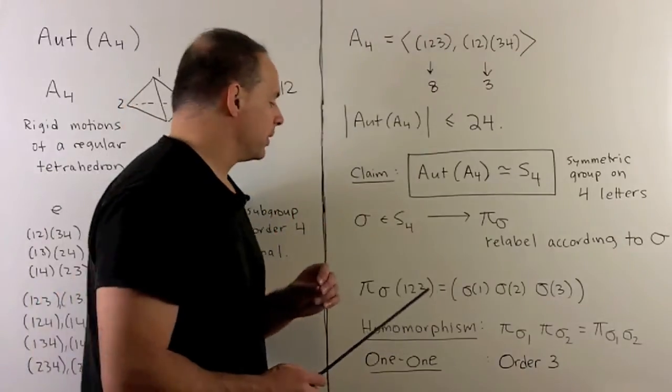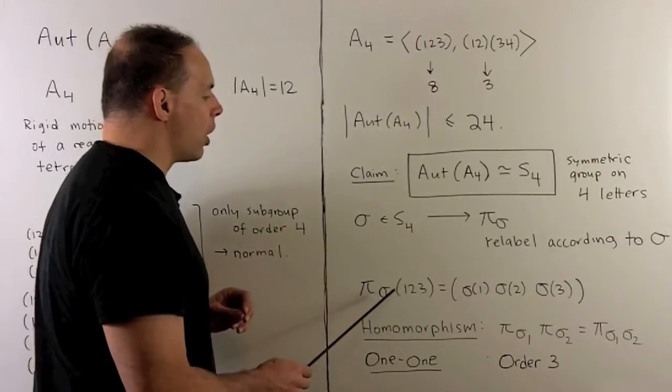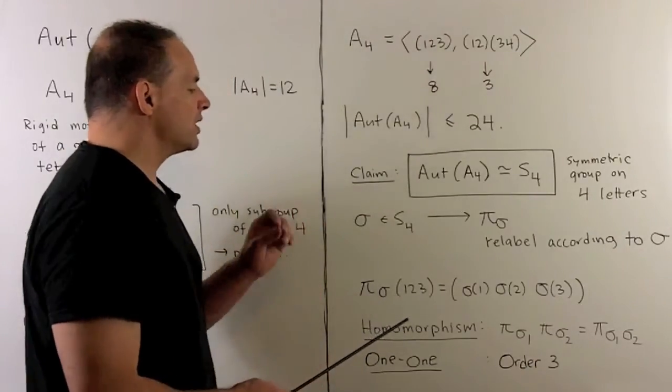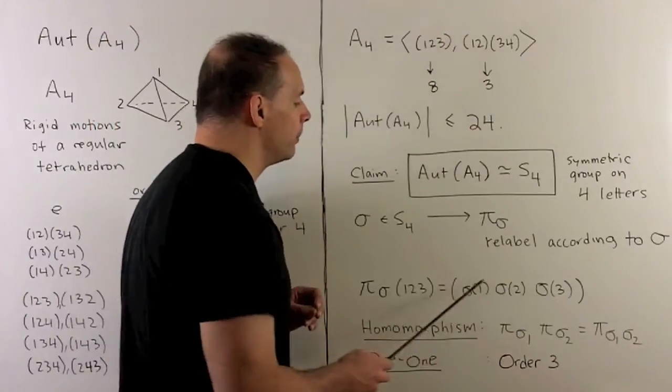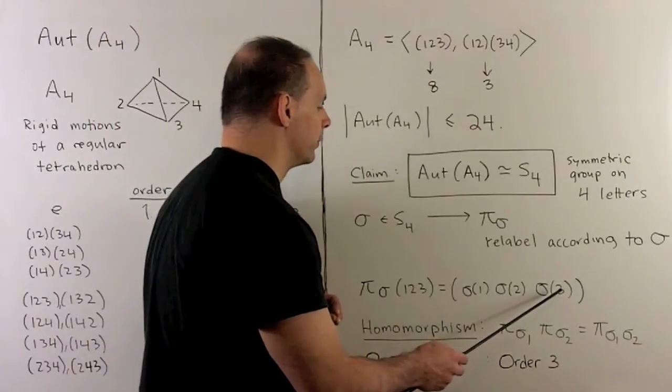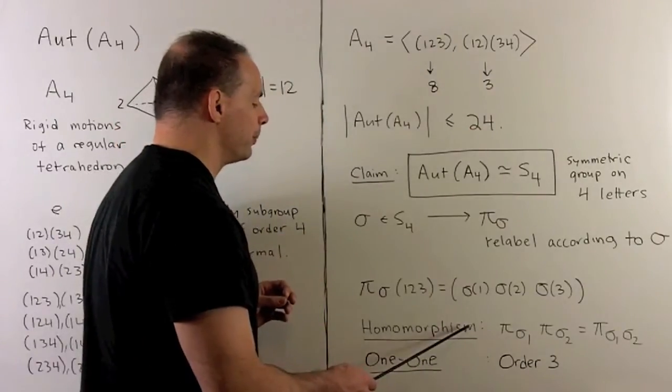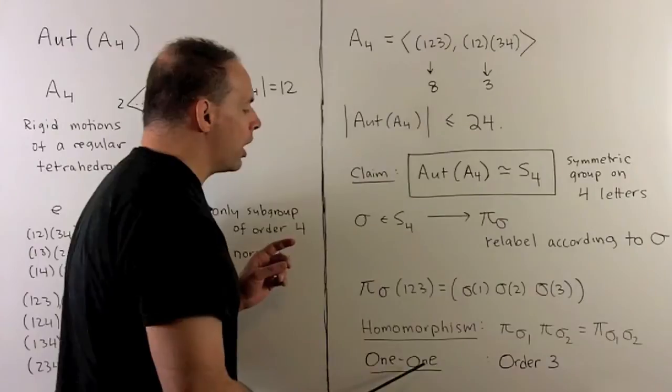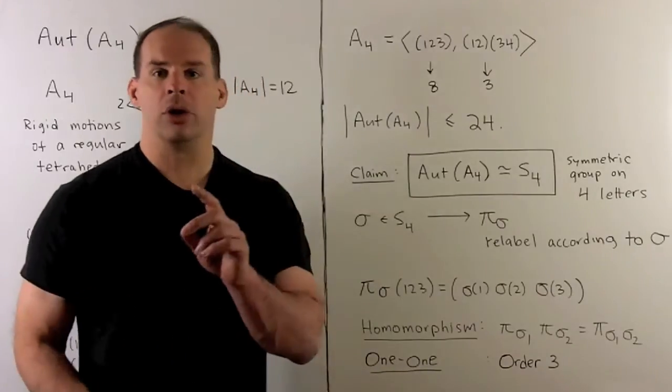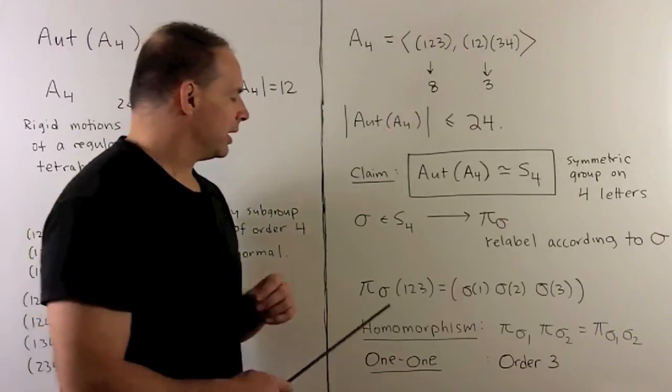For instance, if we have π_σ on (1,2,3), we're just going to send that to the three cycle (σ(1), σ(2), σ(3)). On the next board we'll see that this is a homomorphism. To see that it's one to one, we have to show that the kernel of this π is the identity.